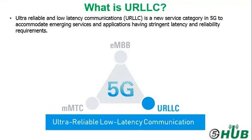3GPP has specified ultra-reliable low-latency communication as a key feature for Release 15 5G New Radio, in addition to enhanced mobile broadband. Per 3GPP Release 14, latency with 4G LTE is in the 4-millisecond range, but with the introduction of URLLC in Release 15, the target is 1 millisecond. It also provides end-to-end security and around 100% reliability.